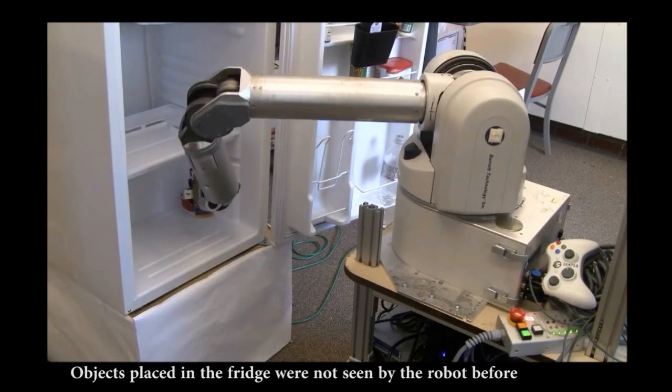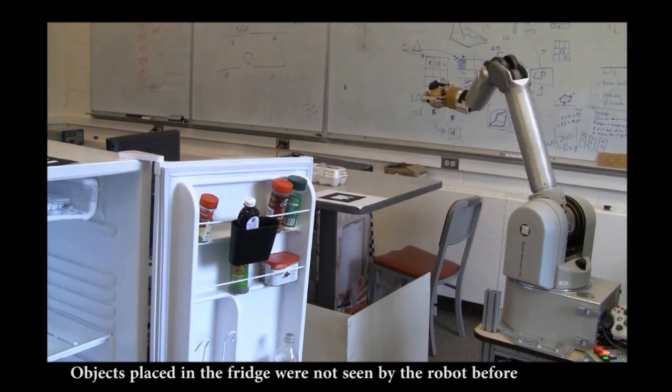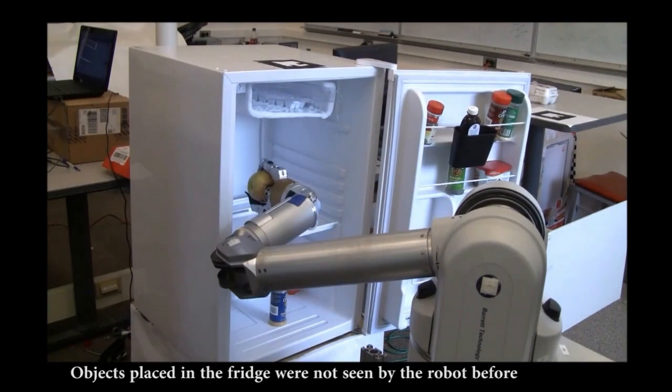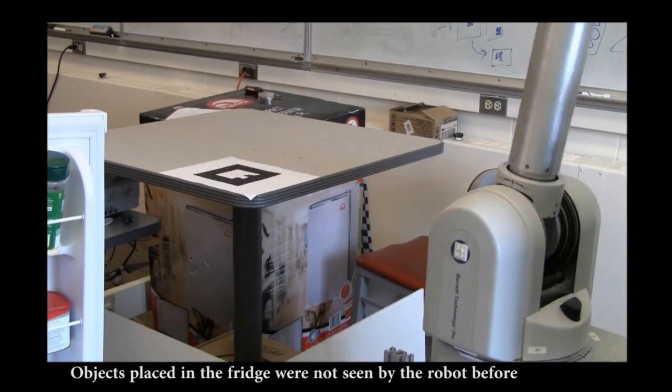Second, the placement needs to be both stable and semantically preferred. For example, a plate should be placed into a dish rack vertically rather than horizontally. In order to address these issues, we use a learning algorithm instead of planning or hand-scripted heuristic rules.